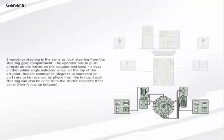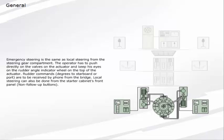Emergency steering is the same as local steering from the steering gear compartment. The operator has to push directly on the valves on the actuator and keep his eyes on the rudder angle indicator wheel on the top of the actuator.